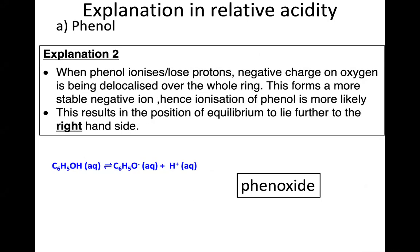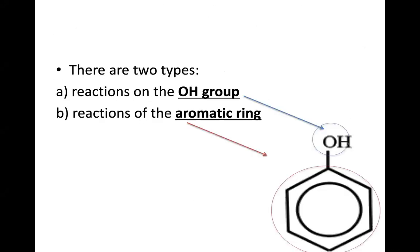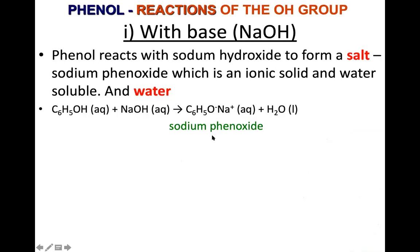Bismillahirrahmanirrahim. Last time we looked at the reactions of phenol. Phenol has two functional groups: the OH group and the benzene ring. These two are very different functional groups. Phenol can have reactions similar to alcohol because of the OH group, or reactions similar to benzene because of the benzene ring. Last time, we were looking at reactions of phenol on the OH group, which makes phenol act like an acid.